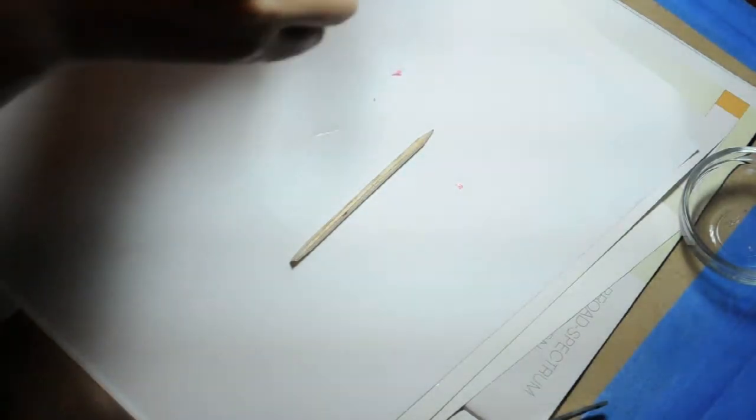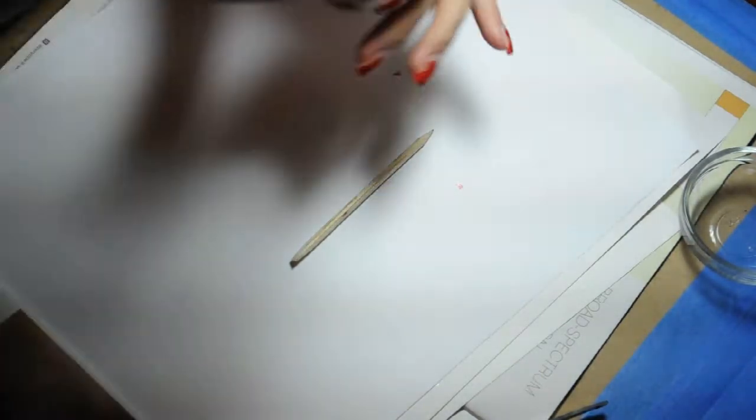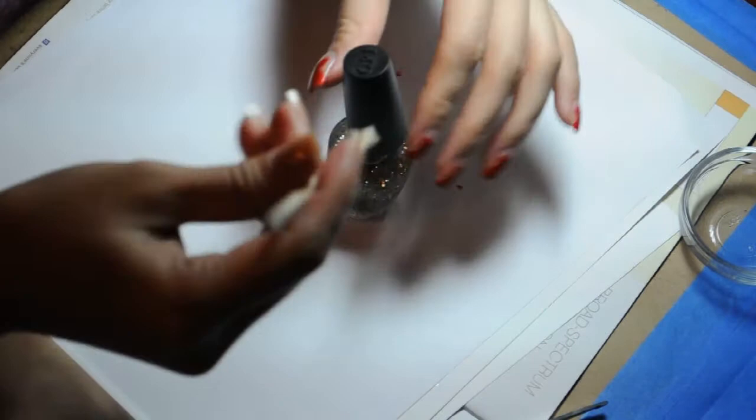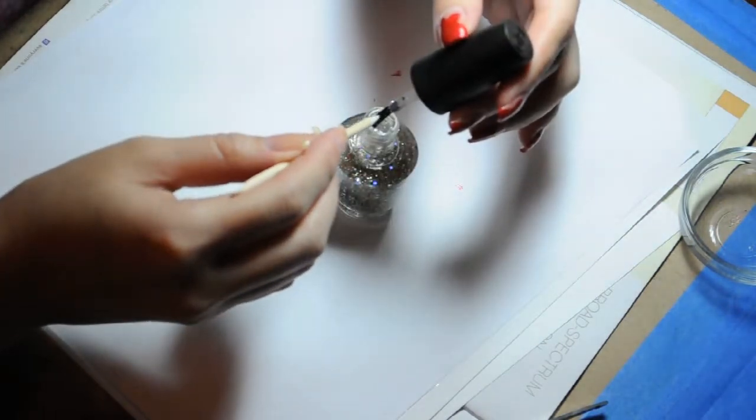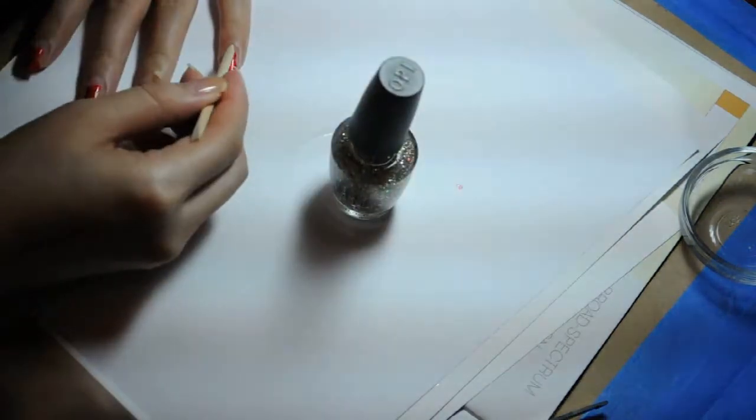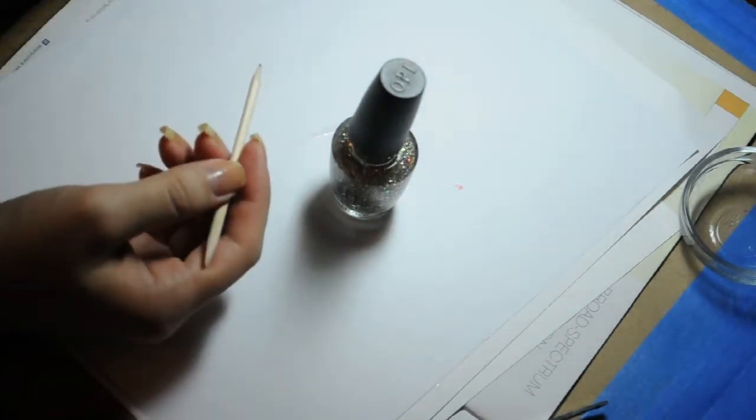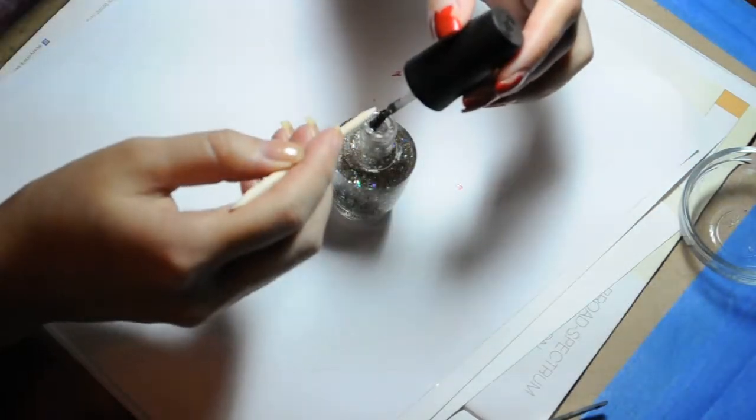Here I'm using OPI Golden Rainbow. I received this as a gift from Nikki at Nikki's Nail Creations dot blogspot dot com. That's her blog. Check it out.